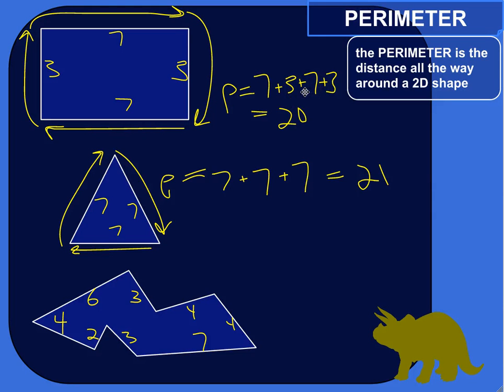All right, the perimeter of a shape, of a two-dimensional shape, is the distance all the way around it.